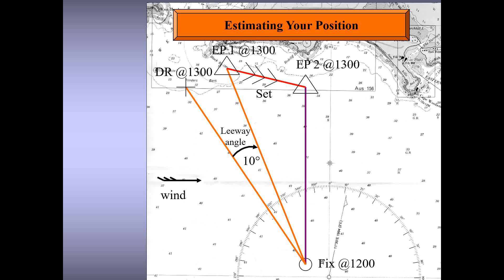This is where the vessel would be if leeway was 10 degrees and a current was also setting. In that case, the vessel would not be making the course marked by the orange lines but rather that marked by the purple line, denoted by double arrows. The double arrows represent the resultant movement of the vessel in the selected time interval — this is also called the course made good, or CMG.